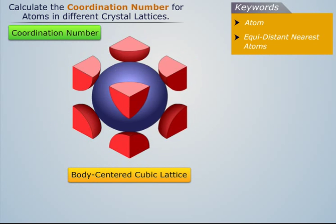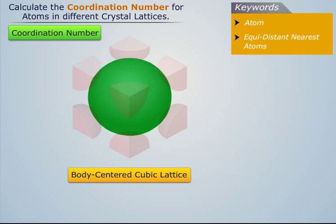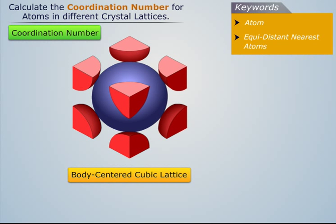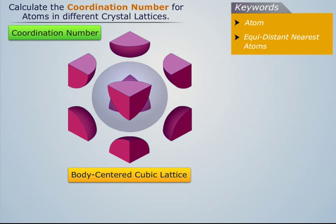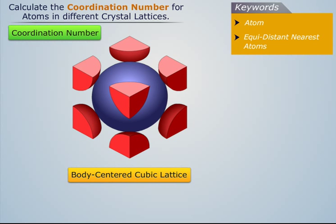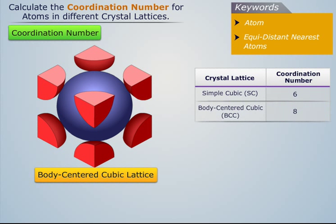We know that a body centered cubic lattice has eight corner atoms and one central atom. The central atom has eight equidistant corner atoms surrounding it. Thus, the coordination number for the central atom in a body centered cubic lattice is eight.